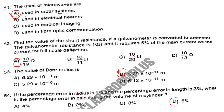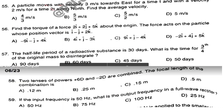Question number 55. A particle moves with velocity 3 m/s towards east for a time t, and with velocity 2 m/s for a time 2t along north. Find the average velocity. The answer is Option B: 5/3 meter per second.